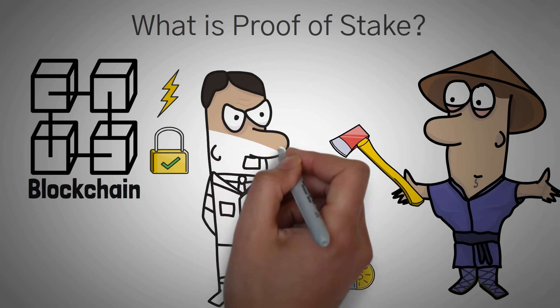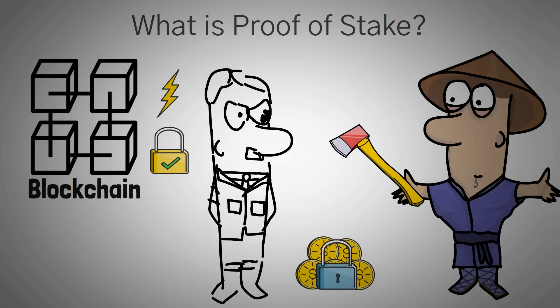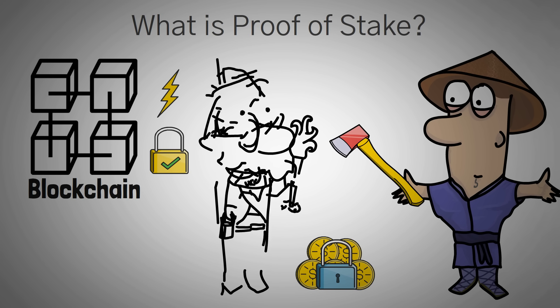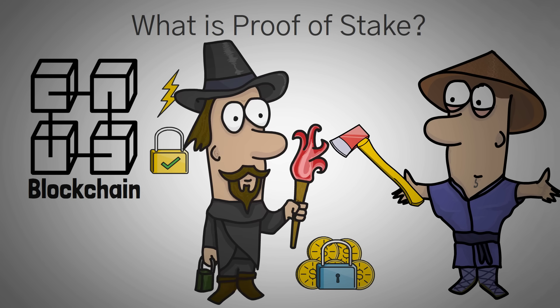The miner is punished for creating any fraudulent transactions by losing their collateral and rewarded for good transactions by the creation of new coins and possibly with the transaction fees that the senders paid.